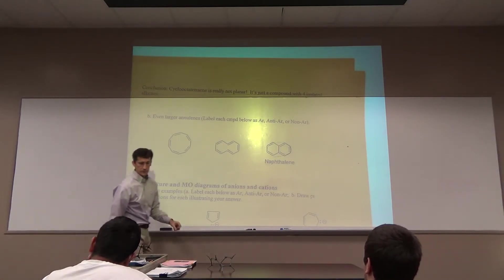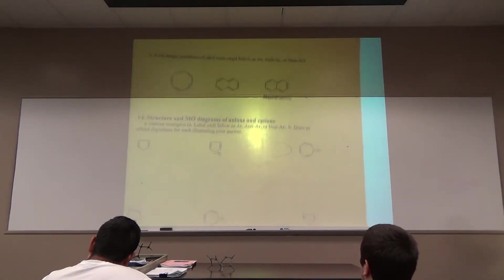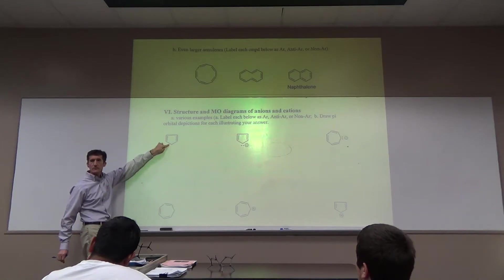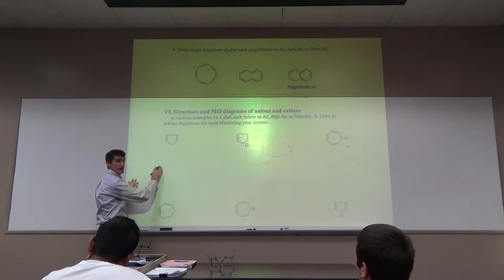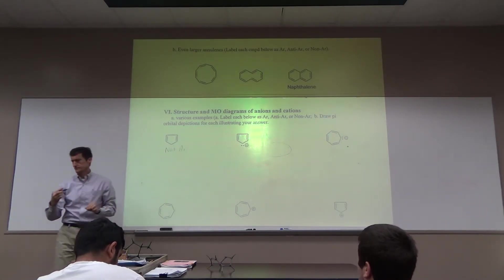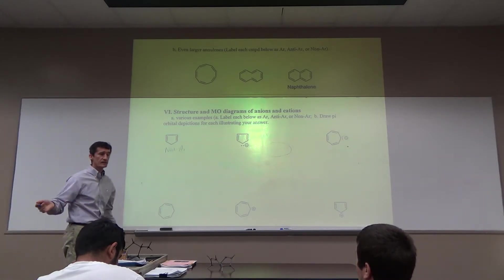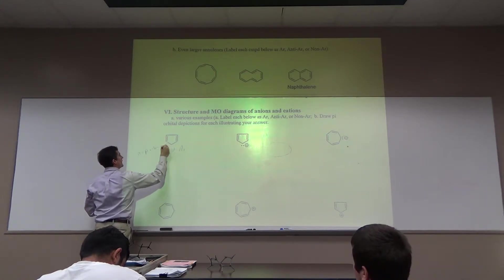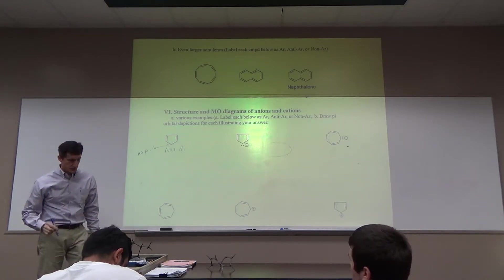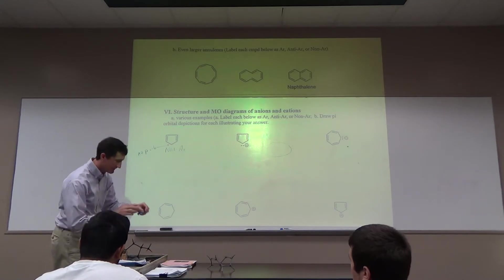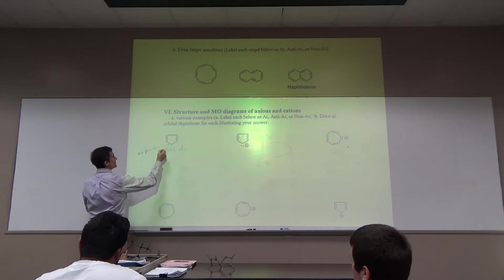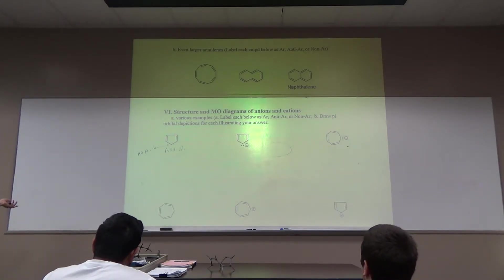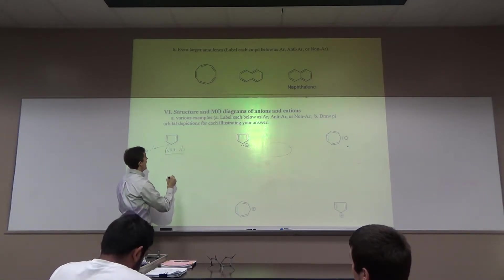Let's look at anions and cations. This compound - is it aromatic, anti-aromatic, or non-aromatic? Non-aromatic. Why? There's no p orbital at the bottom carbon - it's not a cyclic conjugated system. How many hydrogens are on that carbon? Two. It's sp3, so there's no p orbital. It's not a cyclic conjugated system - non-aromatic.